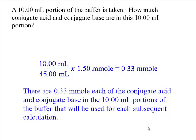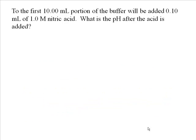For the first 10-milliliter portion, we add 0.1 milliliter of 1 molar nitric acid, and we want to find the pH after the acid is added. We write the net ionic equation: the hydrogen ion from the acid reacts with the conjugate base in the buffer — it combines with benzoate ion to make benzoic acid. We start with 0.33 millimoles each of benzoate ion and benzoic acid, and we're adding 0.1 millimoles of hydrogen ion.